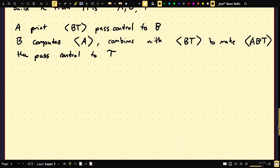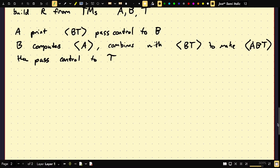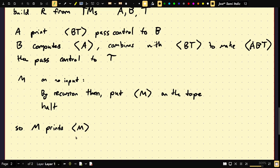By the way, so any Turing machine can obtain a copy of its own description and then by the recursion theorem and then compute with it using this trick. So here's an example of proving the existence of a program which prints its own encoding. So let we'll call it M on no input. So I could also say on input W erase W should be fine. On no input by recursion theorem, put M on the tape, halt. So M prints its own encoding here easy. So M prints M.